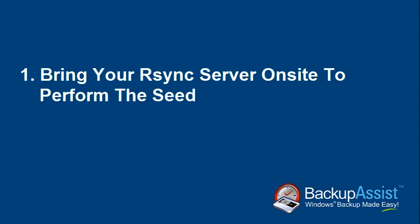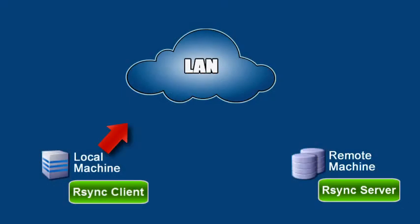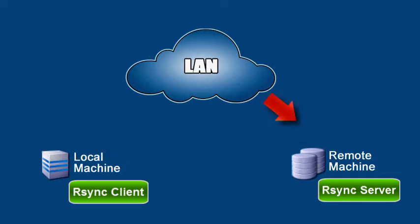Let's take a closer look at option 1. This method is suitable for RSync servers that are portable and are not shared among multiple clients. To begin, we need to bring our RSync server on-site and connect it to the local area network, taking note of its IP address.